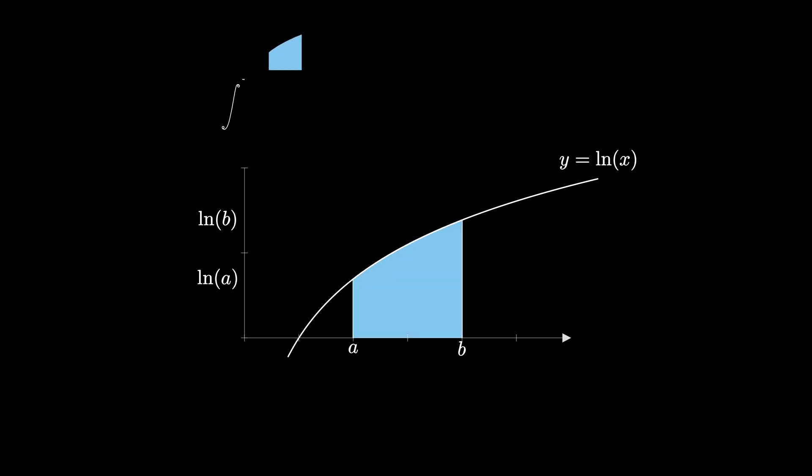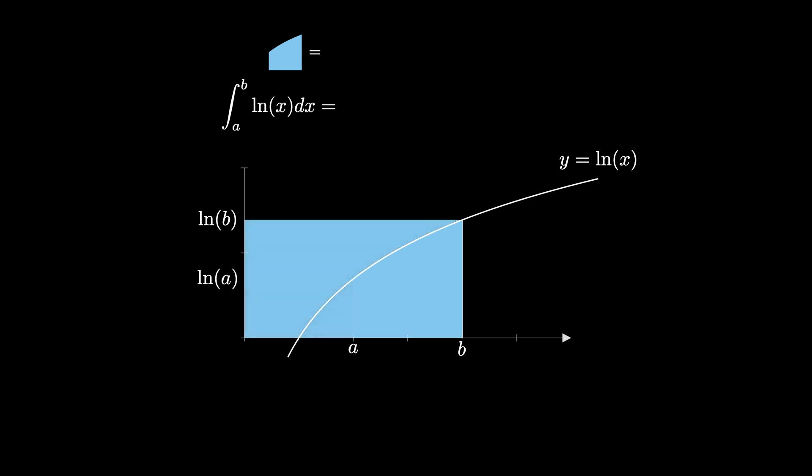This area is represented by the definite integral from a to b of the natural log of x dx. One way to find this area is to start with the large b by natural log of b rectangle shown here, which has an area given by the quantity b times natural log of b.